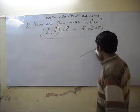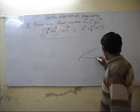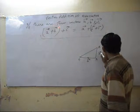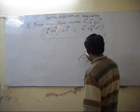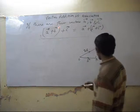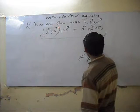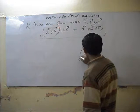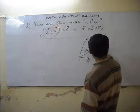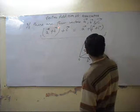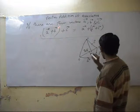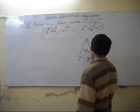Suppose this is a triangle O, A, B. This is the A vector, this is the B vector, and its resultant on the opposite side is the AB vector.